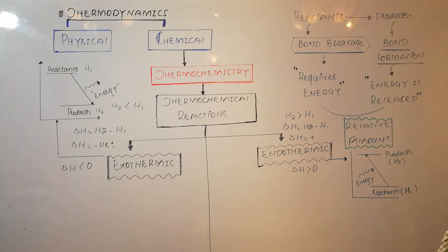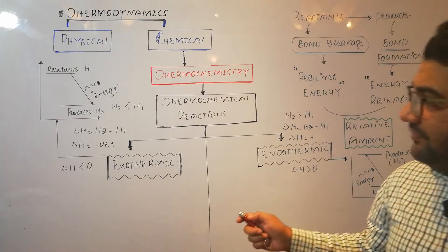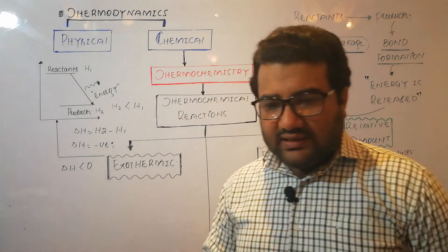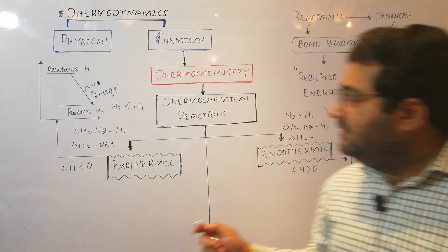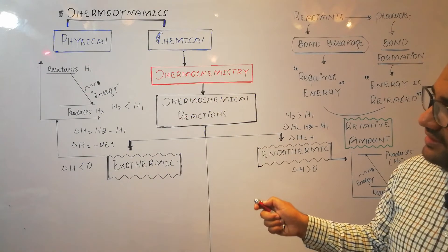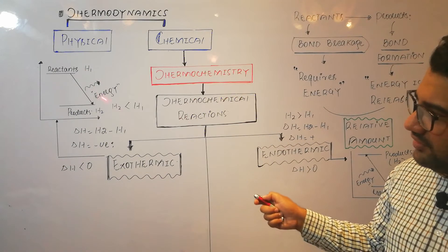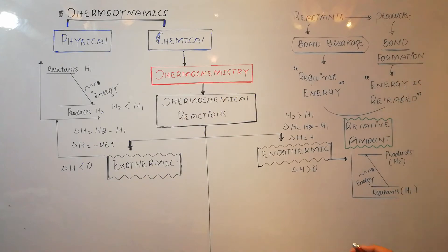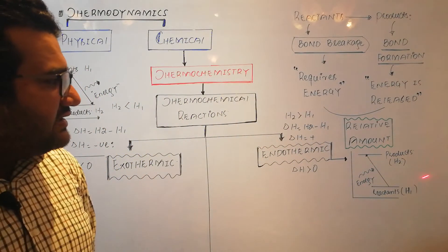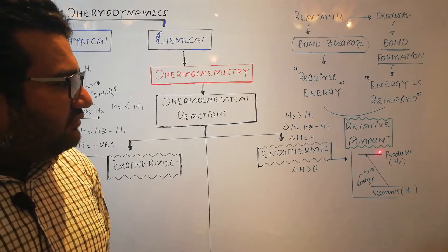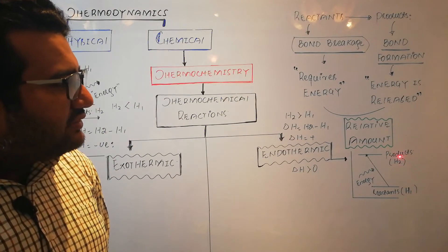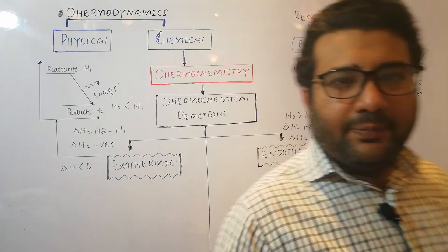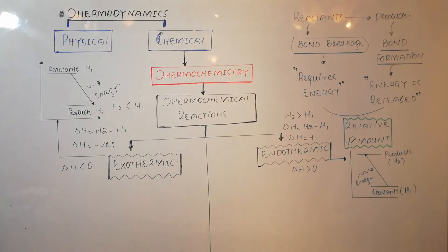When the heat content of the reactants is more and the products have less heat, energy is inversely proportional to stability. So reactants with more energy are less stable, and products with lesser heat are more stable in an exothermic reaction. But in an endothermic reaction, the energy content of the products is greater than the reactants, so the products will be less stable compared to the reactants. This is another key difference between exothermic and endothermic reactions.